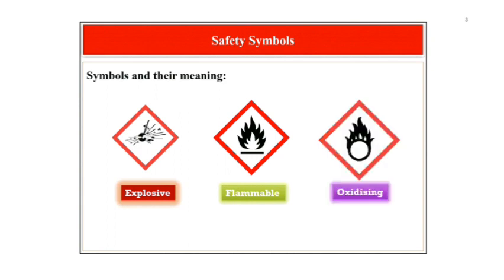The next symbol is the symbol for oxidizing materials. This symbol includes a flame over a circle. It indicates the presence of chemicals that readily give off oxygen or other oxidizing substances. Oxidizing materials may intensify fires, cause explosion, and may be toxic or corrosive. Some common oxidizing liquids and solids are bromine, chlorate, nitrate, perchloric acids and epoxides.